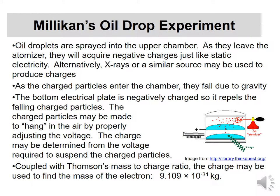Then Millikan comes along with what's called an oil drop experiment. From Thomson's day, we knew the charge-to-mass ratio for electrons — his negative particles — and the question was: if I know either the charge or the mass, I can figure out the other. Millikan developed an experiment where he has a microscope to see inside a chamber, a positively charged plate on top, a negatively charged plate on the bottom, and an x-ray source. He sprays a little oil using an atomizer — that's where the oil drop name comes from.